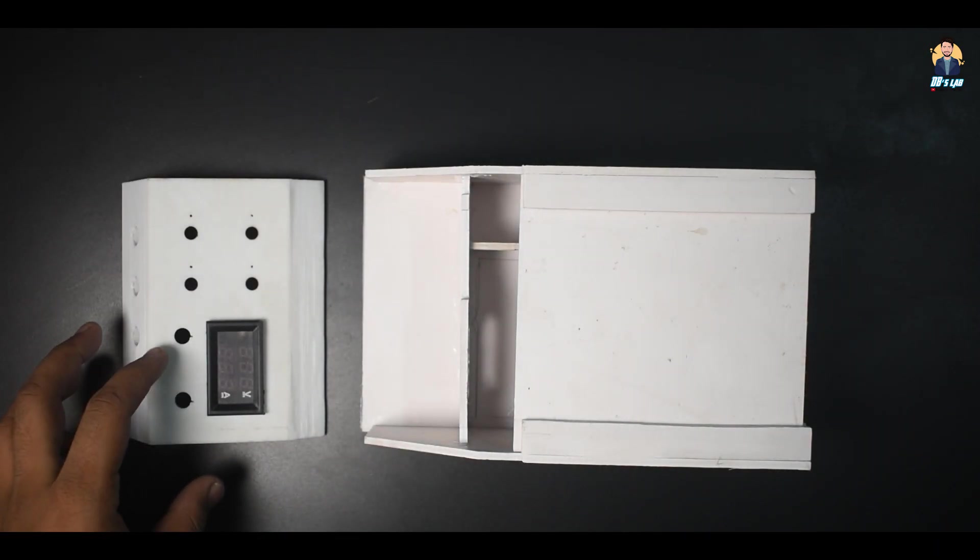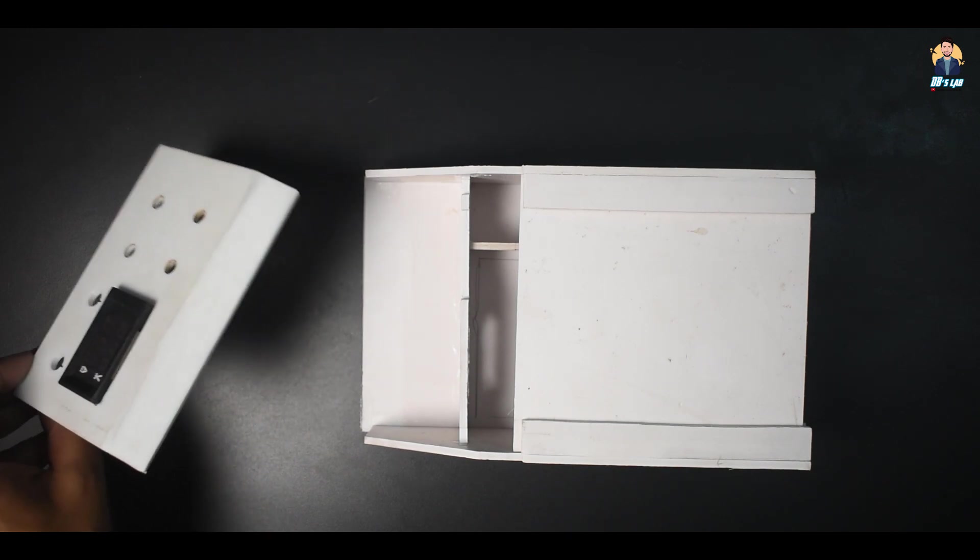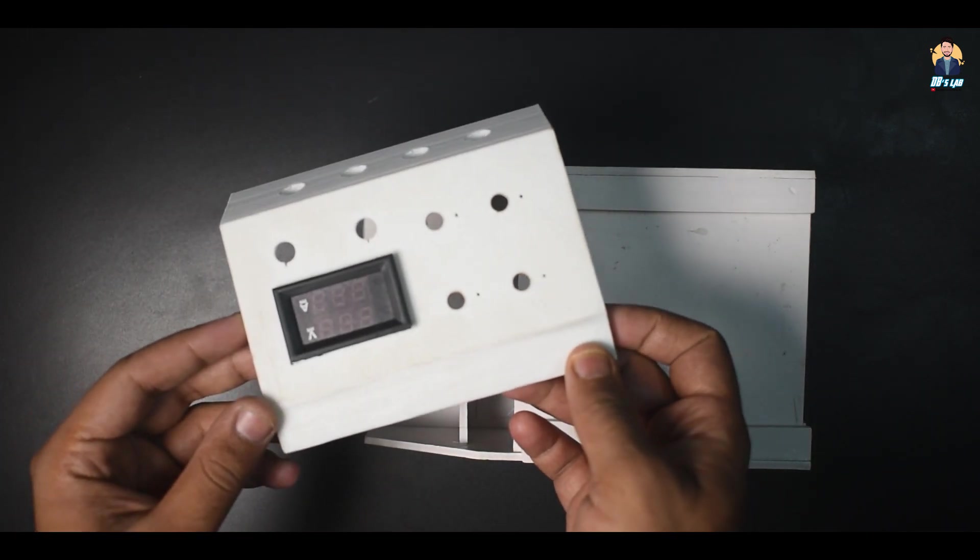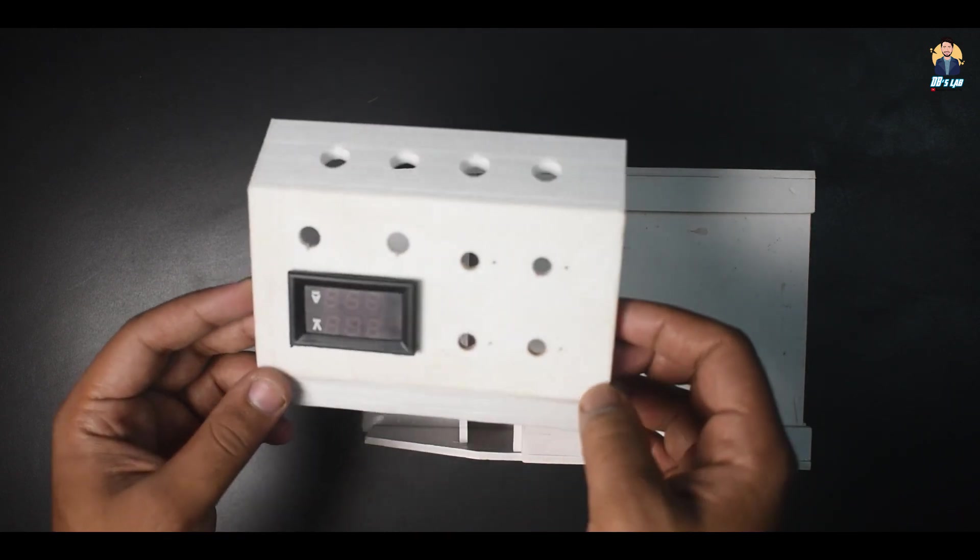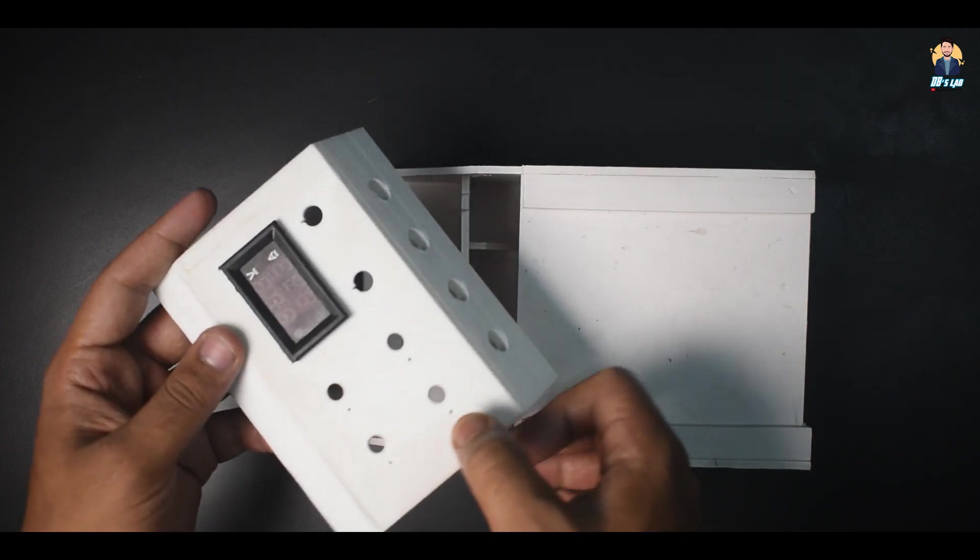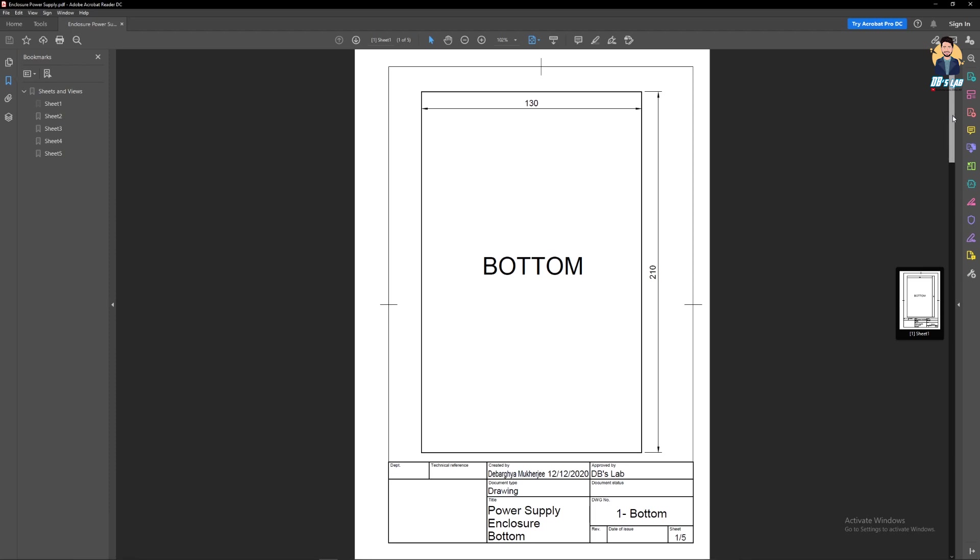The front panel is 3D printed in ABS for additional strength as I carry the power supply a lot. But you can also make this using sunboard. In that case the dimensions are provided.